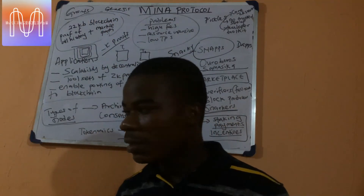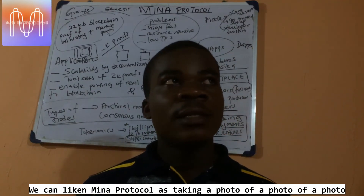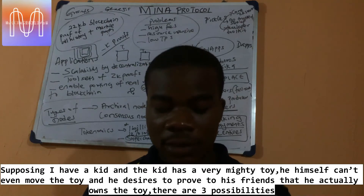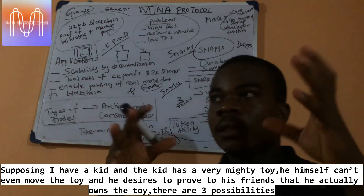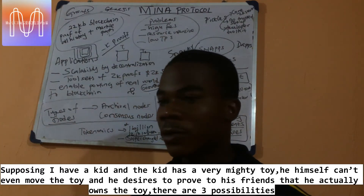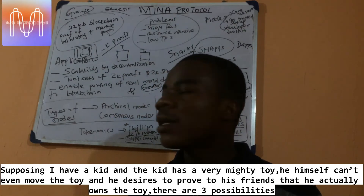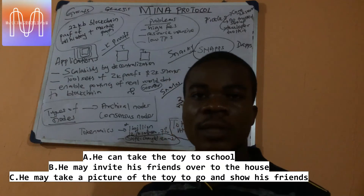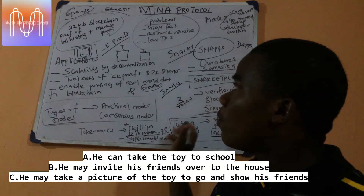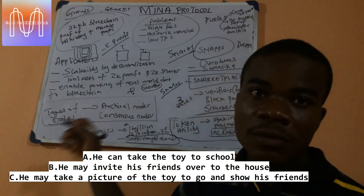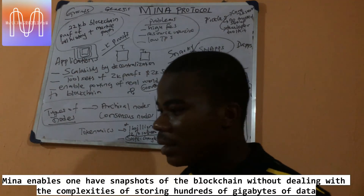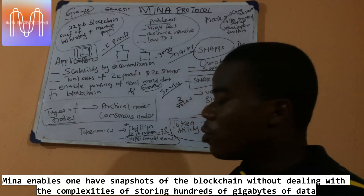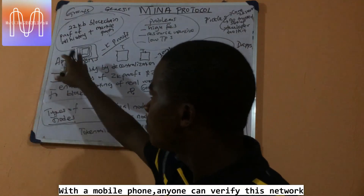To recap, the Mina Protocol is a system that takes a photo of a photo of a photo. Imagine a kid with a very large toy that can't even be moved out of the house. The kid can either take the toy to a screen — which is nearly impossible — invite friends to come see it, or just take a photo. Mina makes it so that using ZK proofs, you no longer have to deal with the hassle of 300 gigabytes like other networks. With just a mobile phone, anybody can verify the chain, and there are native applications built for that.